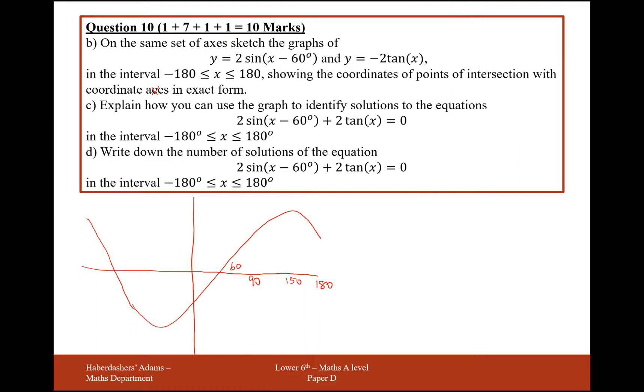This intersection point down here, it'll be sin(-60°), that's √3/2 times it by 2, that'd be √3. Minus √3, sorry. The next one down here, that's going to be -30, the minimum point there. This one here is going to be -120, and this point is going to be -180.